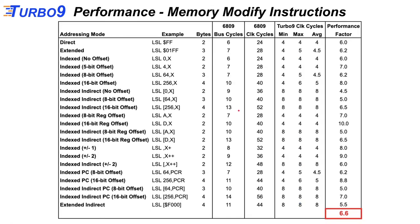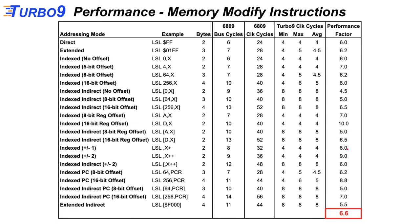For memory modify instructions — instructions that load an operand from memory, perform an operation, and write it back (a read-execute-write in one instruction) — using a logical shift left, we're getting a 6.6x average performance increase, with some addressing modes showing a 10x performance factor.